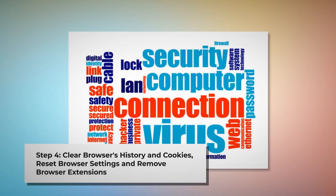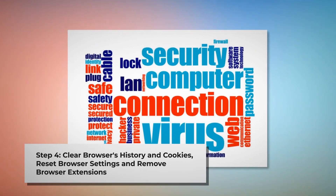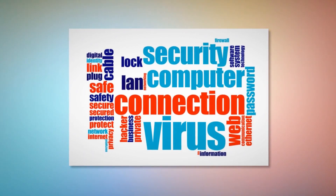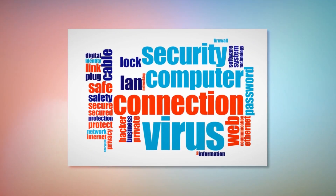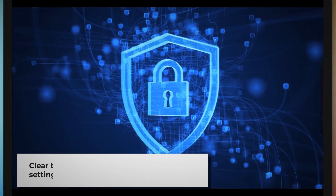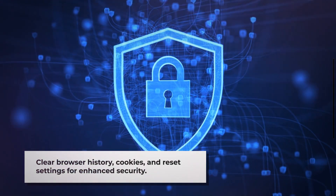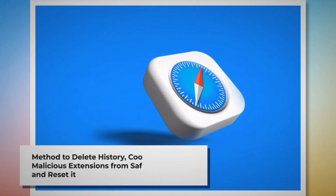Step four: clear browser history and cookies, reset browser settings, and remove or disable unknown browser extensions to be safe from adware. Once you delete the harmful files as mentioned in step three, you should delete malicious or unknown extensions from your browsers — Safari, Chrome, Firefox, Opera, and so on, whichever you are or were using. You should also delete browser history and cookies, and reset your browser. Note: before you reset your browser settings, it is always a good idea to back up your bookmarks.